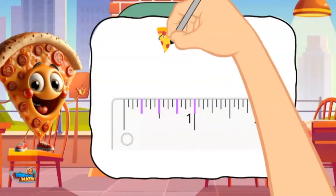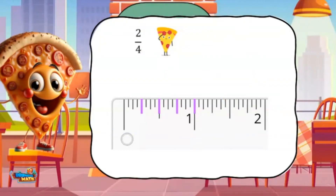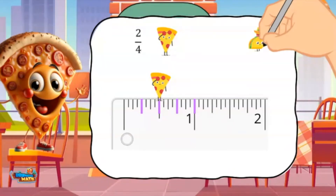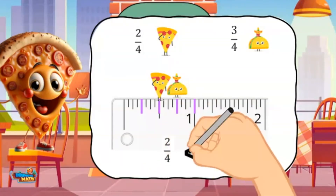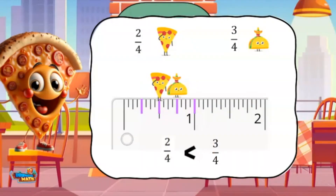Pizza men traveled 2 4ths of an inch, which means he is located at 2 purple marks from 0. Taco men traveled 3 4ths of an inch and is located at 3 marks from 0. Taco men is further along, which means 2 4ths is less than 3 4ths.